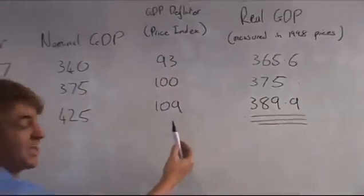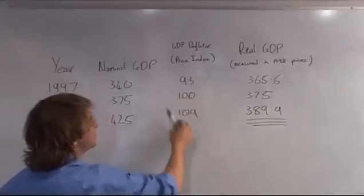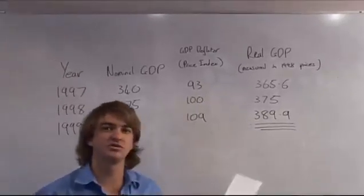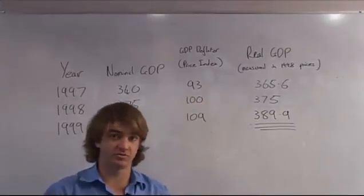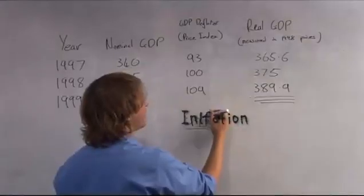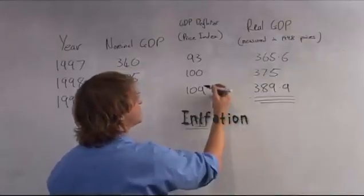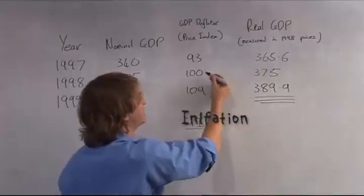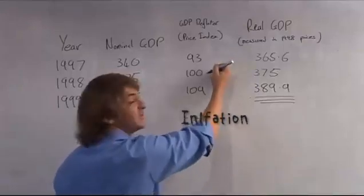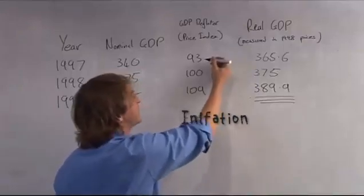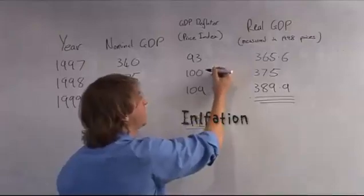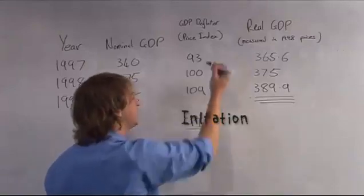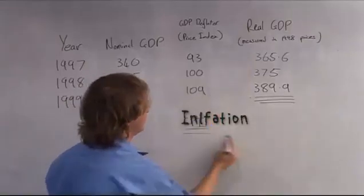An interesting factor here is what the price index is indicating. It's taking the actual value of those baskets of goods. You can work out inflation from here just by taking the percentage change from one value to the other. So the percentage change inflation from 97 to 98 will be 100 minus 93, over 93, times 100 — and that gives you your inflation.